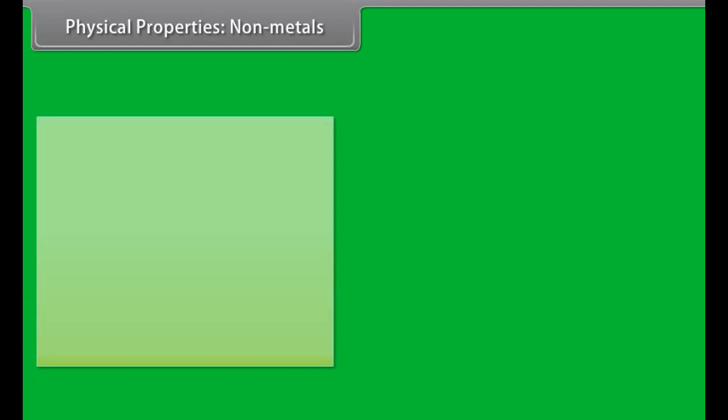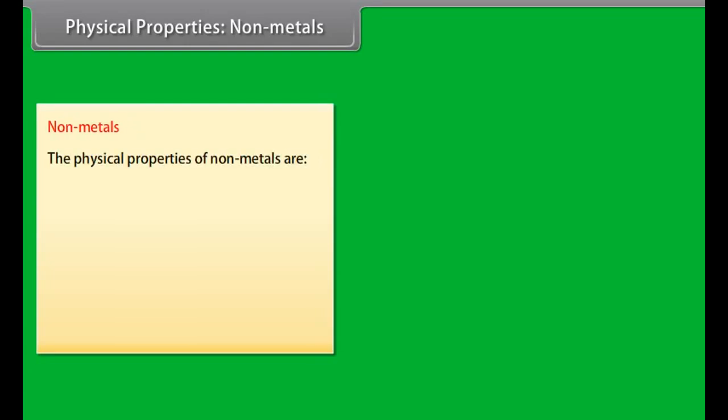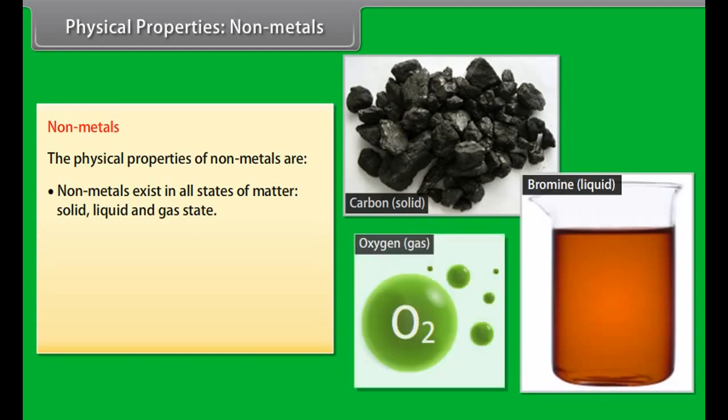Physical properties: Non-metals. Let us now look at the physical properties of non-metals. Physical state: Non-metals exist as solid, liquid or gases at room temperature. Gas: oxygen, chlorine, fluorine. Liquid: bromine. And solid: carbon.